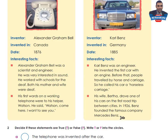Dear students, let me ask you some questions. Who invented the telephone? Excellent — Alexander Graham Bell. What did Karl Benz invent? The car. When was the telephone invented? In 1876. What was Bell's job? A scientist and engineer. What did Benz call the first car? Horseless carriage. Why did he call it this? Because before that, people traveled by horse and carriage.